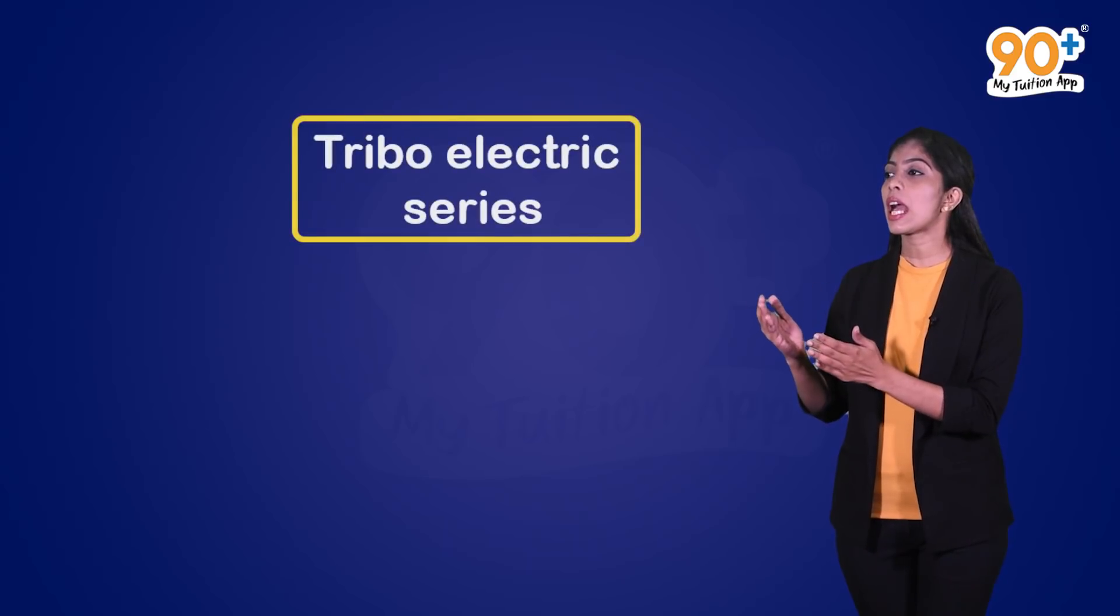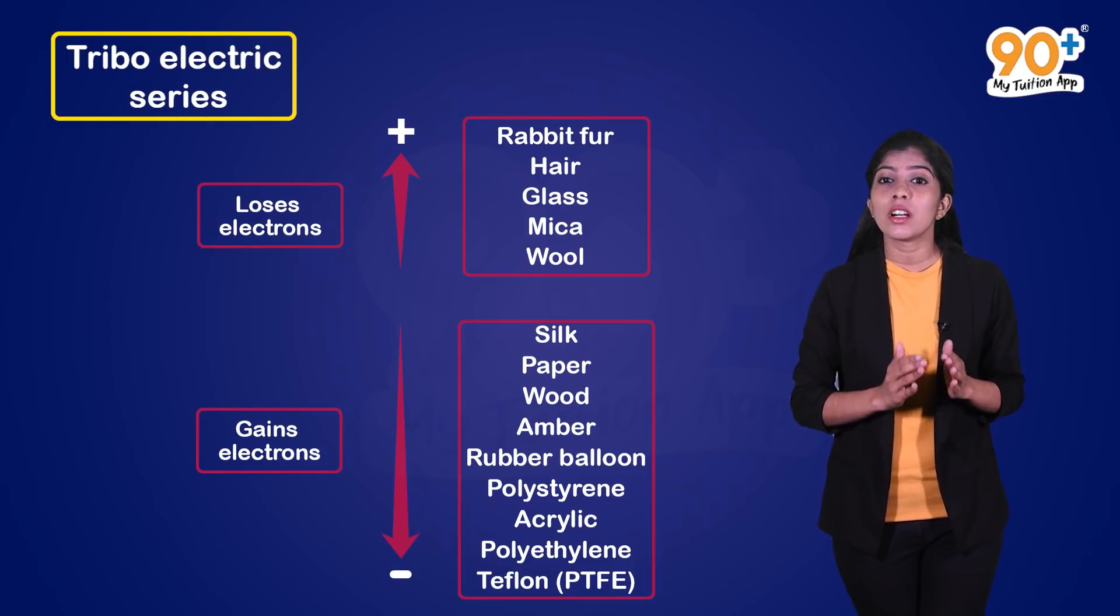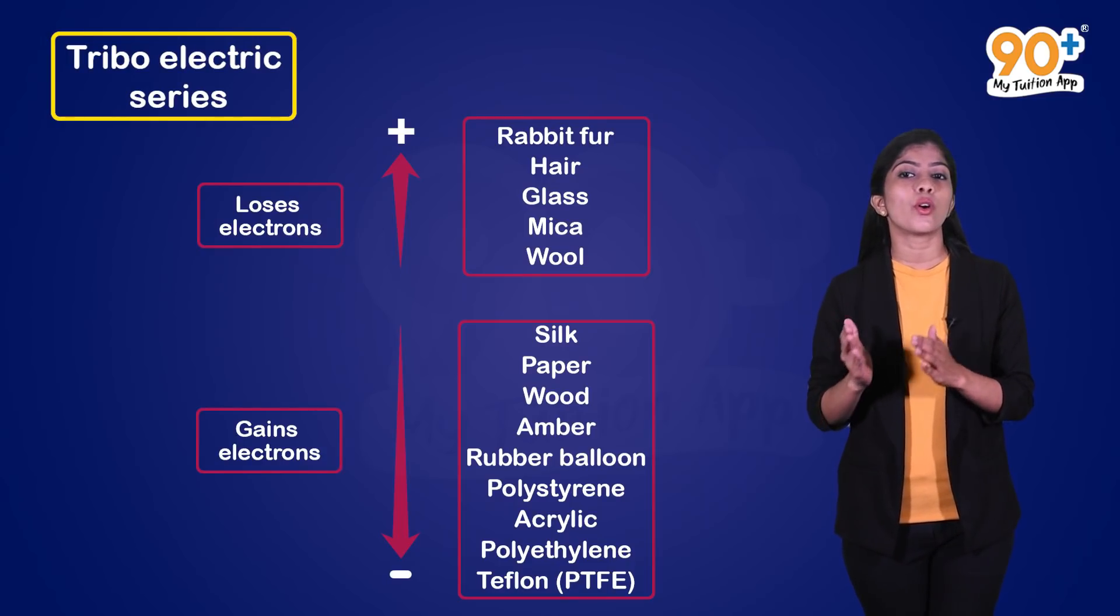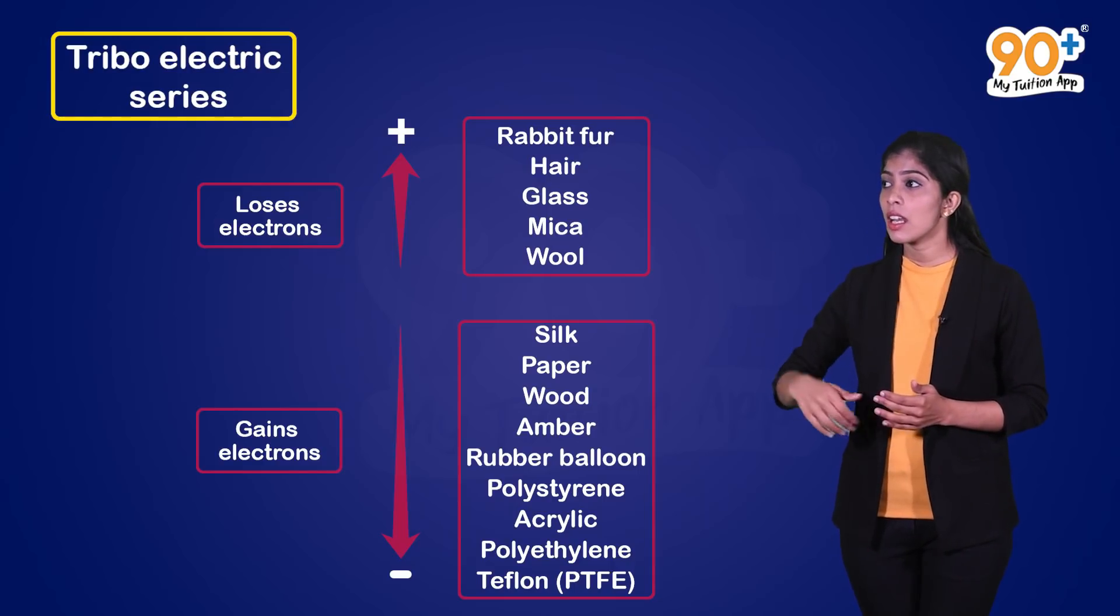The answer to this question is explained by triboelectric series. This is a series where all objects are listed according to electron transfer. In this, we can see human hair, balloon, polythene, etc.